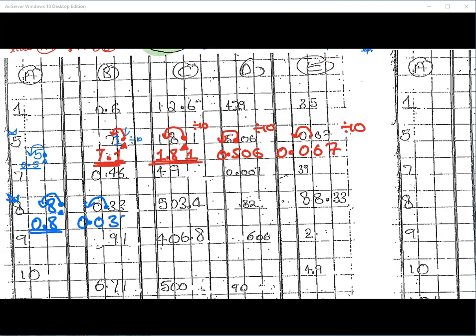Next: 0.33 divided by 10. What do we do? Move the decimal point back one place, so the answer becomes 0.033. Remember, we never say 'nought point nought 33' — we always read digits after the decimal point individually. So we always read this as 0.033. Next: 503.4 — move the decimal point back once, giving 50.34. You can say 'fifty point three four' because on the left-hand side you read like a normal number, and after the decimal point you read individual digits.